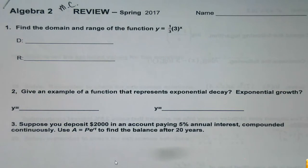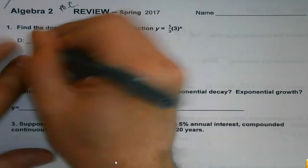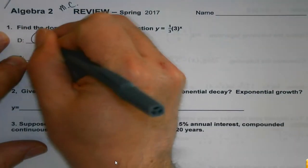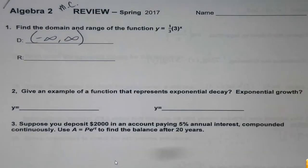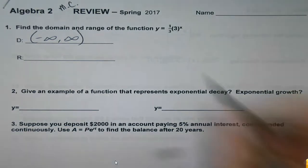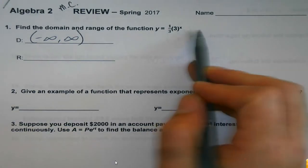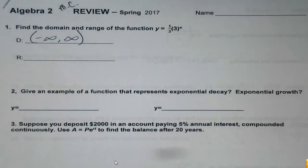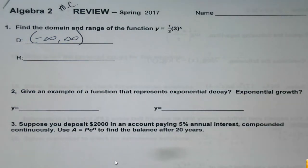Domain and range of the following function. We've said this a few times here in the last week. When we're looking at growth and decay functions, my domain never changes — ever. Even if there's a number out here, it doesn't matter. Even if this is a fraction, it doesn't matter. Domain is negative infinity to infinity.